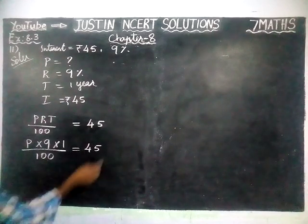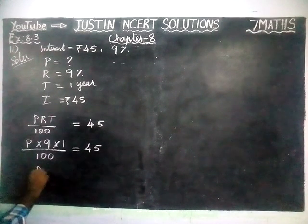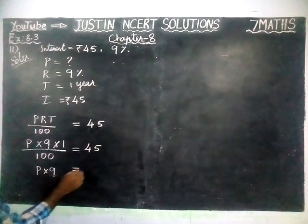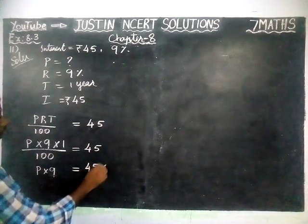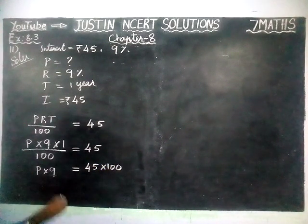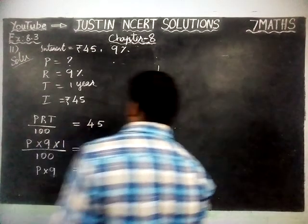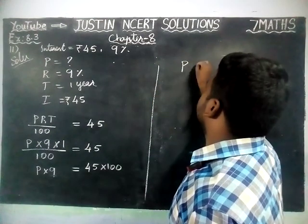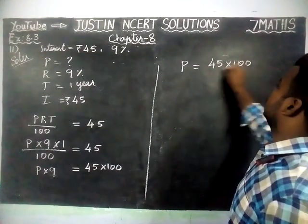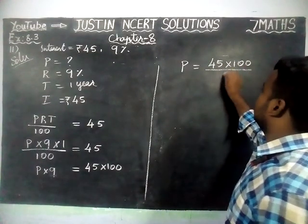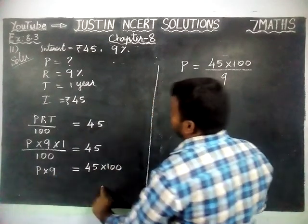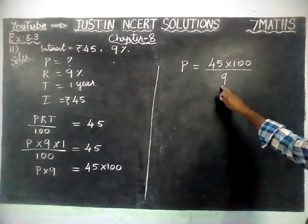Now I am going to take this 100 to the right hand side. P into 9 into 1 is equal to 9 only, so we write only 9. That is equal to 45 into 100. Now, we are going to take this 9 to the right hand side. P is equal to 45 into 100 divided by 9, because when multiplication goes to the right hand side, it becomes division.